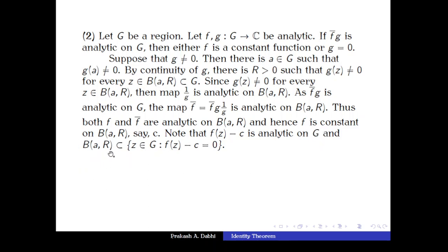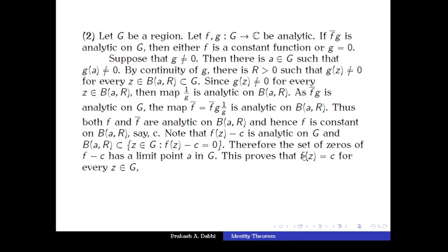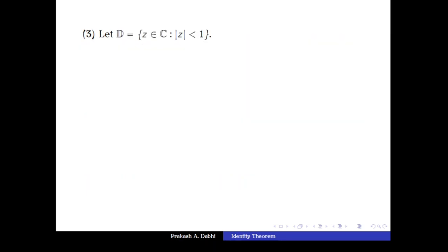We note that f(z) − c is analytic on all of G, and B(a, r) ⊆ {z ∈ G : f(z) − c = 0}, since f(z) = c for every z in B(a, r). The set B(a, r) has a limit point a which is in G, so a is a limit point of the zero set of f − c. By the Identity Theorem, f − c ≡ 0, meaning f(z) = c for every z in G. Thus f is a constant map.